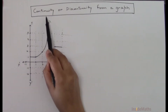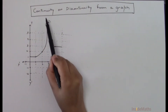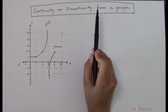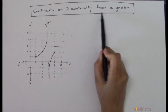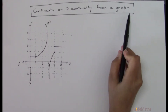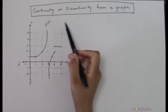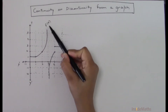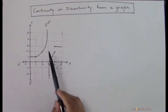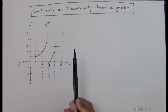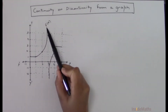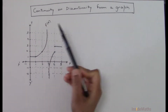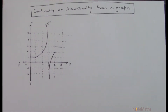In this video you will see how to check the continuity or discontinuity of a function from a graph. This is the graph of the function f, and we have to check at which points this function is continuous or discontinuous.